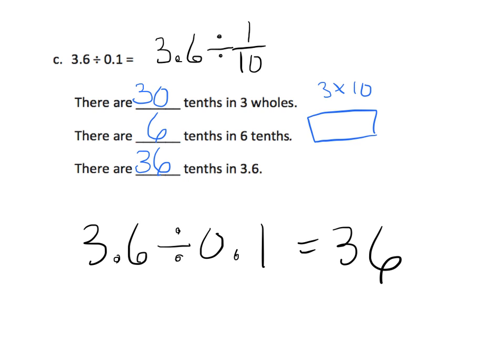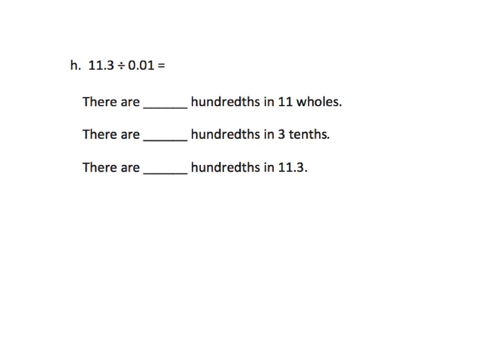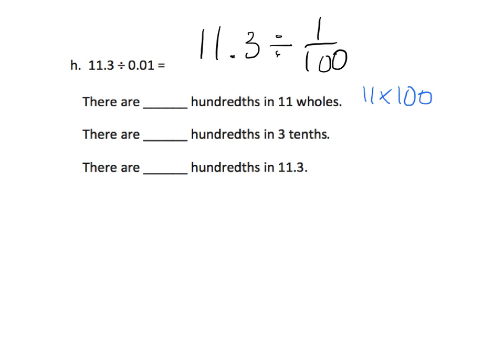Let's do another practice. This time we've got 11.3 divided by one-hundredth, written as a fraction. The question is: how many hundredths are in eleven? We know there are a hundred hundredths in one, so we need to do eleven times a hundred to figure out how many hundredths are in eleven wholes. That answer is one thousand one hundred.